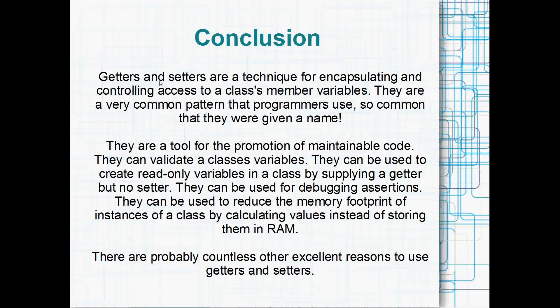In conclusion, getters and setters are a technique for encapsulating and controlling access to a class's member variables. They're a really common pattern that programmers use, so they've been given a name: getters and setters. They're a tool for the promotion of maintainable code — you can use them to validate class variables, create read-only variables, use debugging assertions, and reduce the memory footprint of class instances. There are probably countless other reasons to use them. Hopefully the question of why we don't just make variables public has been answered. Thanks for listening!